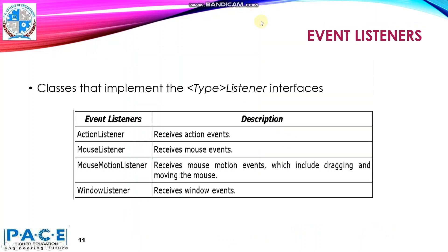Java also provides a number of event listener classes. For example, ActionListener receives the action events. MouseListener receives mouse events. MouseMotionListener receives mouse motion events, which includes dragging and moving the mouse. WindowListener class receives window events.